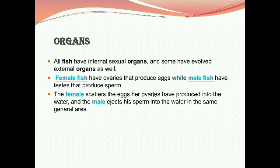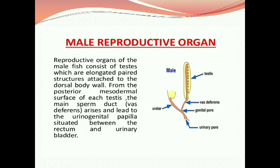What are the organs in the fish reproductive system? All fish have internal sexual organs and some have evolved external organs as well. Female fish have ovaries that produce eggs, while male fish have ducts that produce sperm. The female scatters eggs the ovaries have produced into the water, and the male ejects his sperm into the water in the same general area. Here I show the male reproductive organ.